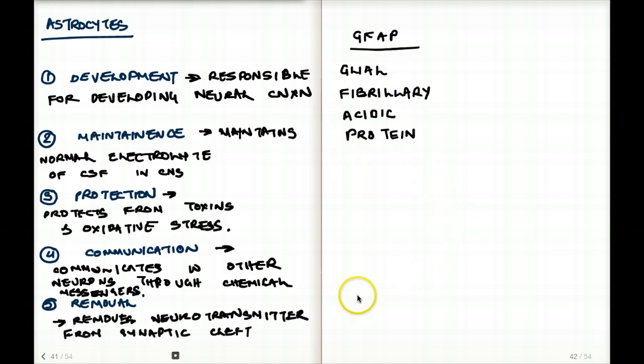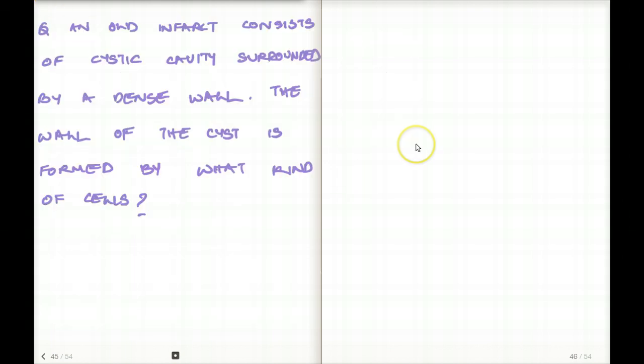Glial Fibrillary Acidic Protein. Do you really have to remember it? Not really. But you do have to remember that GFAP is used as a marker for astrocytes. Last but not the least, let's talk about some scenarios in terms of examples.